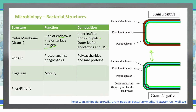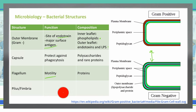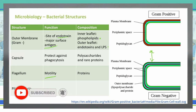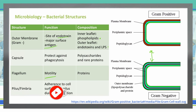Some bacteria also have a flagellum, which is there for motility — to help the bacteria move around, find new places, and become more infectious. It's composed of proteins. Other bacteria don't have a flagellum; they may have a pilus or a fimbria. The function of the pilus or fimbria is to adhere to the cell surface, and the sex pilus is used during conjugation so that bacteria can undergo reproduction. This is all made up of glycoproteins.